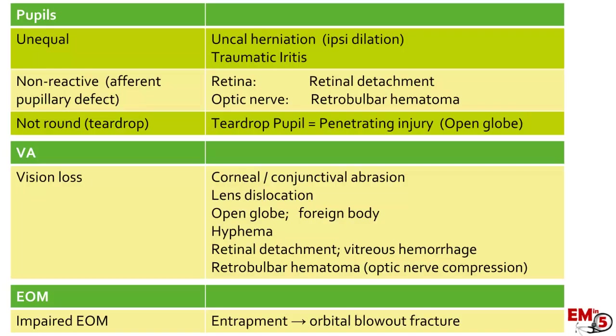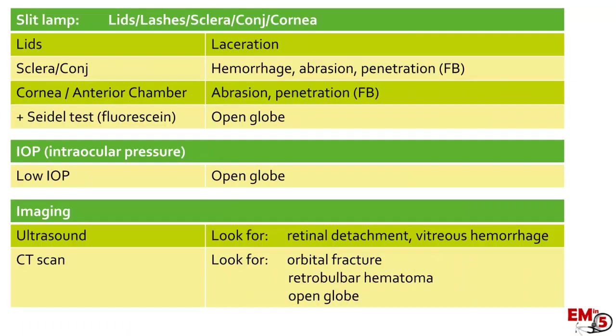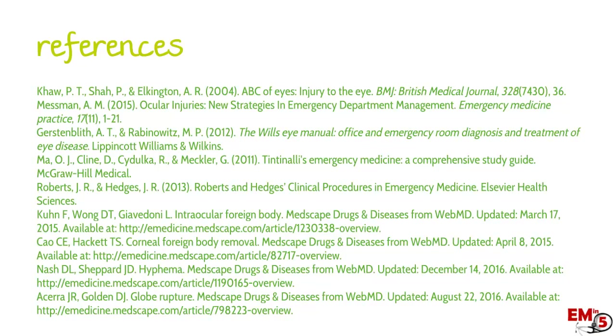To recap: if you do your full exam and use adjunctive tools, you should be able to come up with a diagnosis. What we're looking for are ocular emergencies such as retrobulbar hematoma or any signs of open globe such as teardrop pupil, positive Seidel's test, or low intraocular pressure. Here's the full list of abnormal exam findings and their associated diagnoses, along with some references. Thanks for joining us on EM in 5.